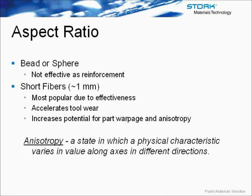Aspect ratio is defined by length divided by diameter. A bead or sphere would have an aspect ratio of one, while going from short fiber to long fiber to nanofiber would represent increasing aspect ratios, resulting in higher increases in strength. Short fibers are very effective in reinforcing materials and are very popular right now. The drawbacks are that they accelerate tool wear of the mold, and they increase the potential for part warpage and anisotropy — orientation effects of the filler within the material.